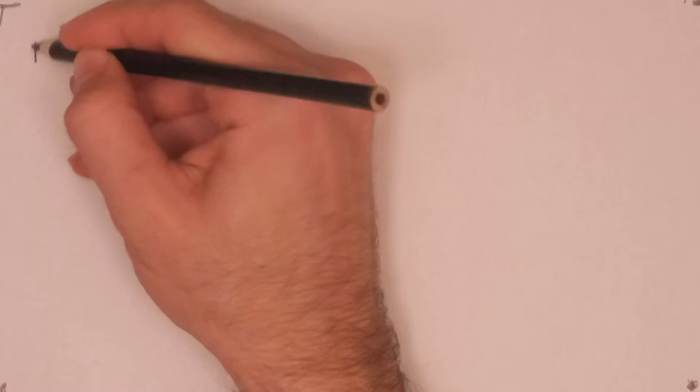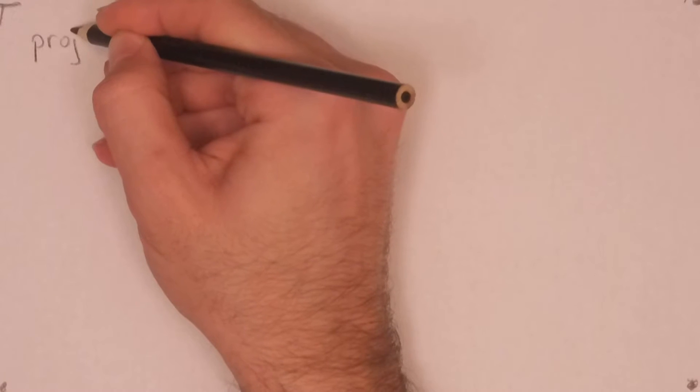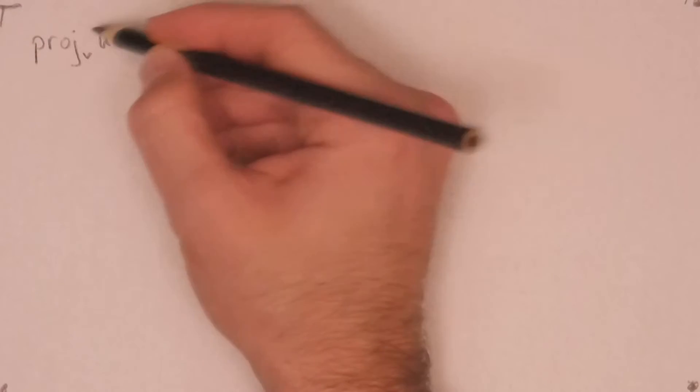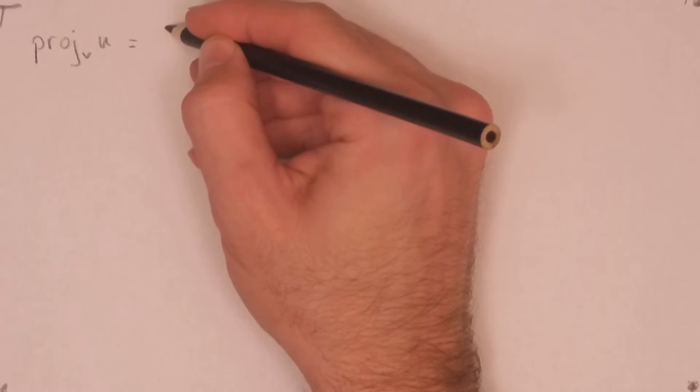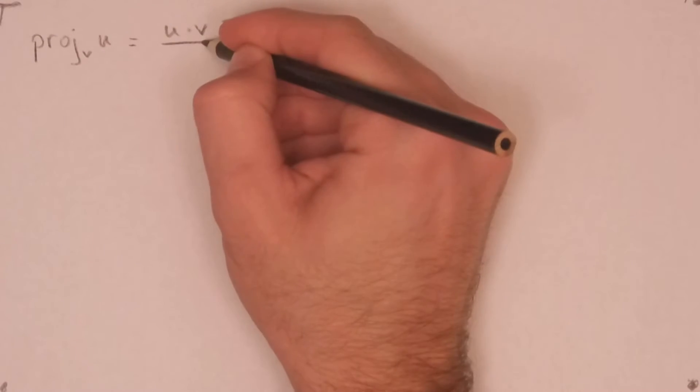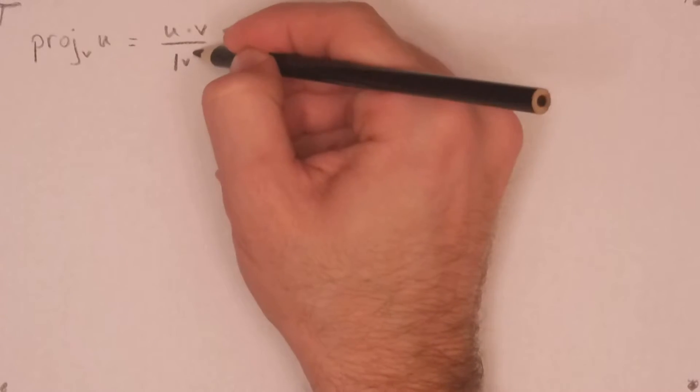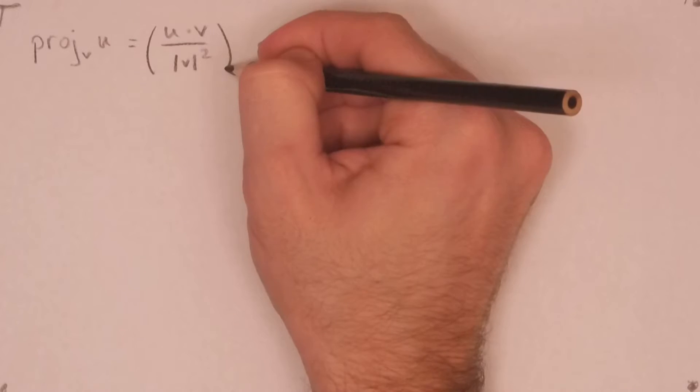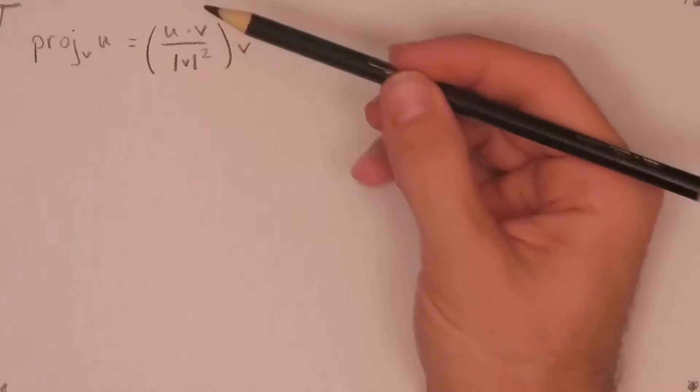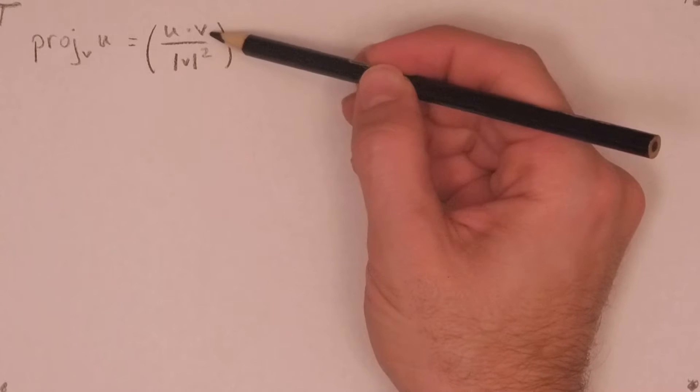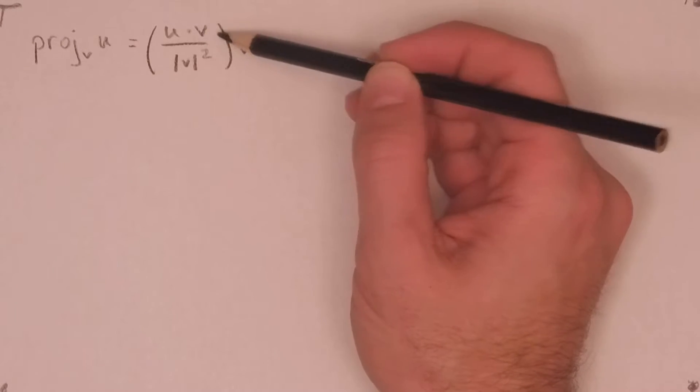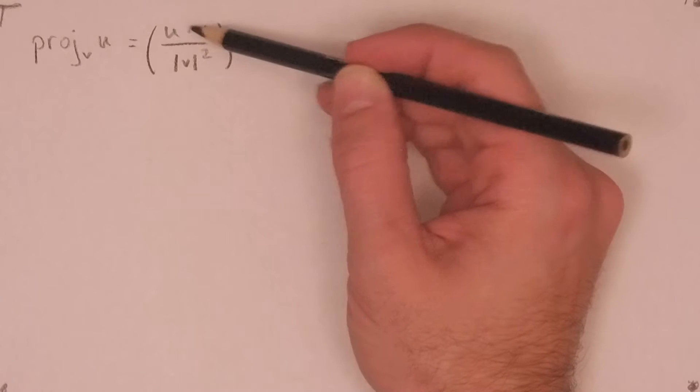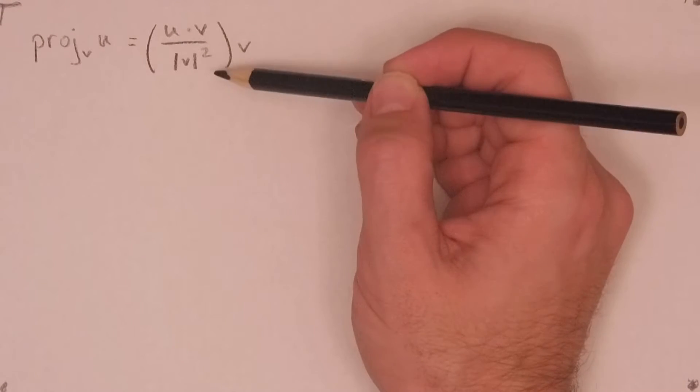So the projection of u on v. The notation for this is as follows here. We have the projection of u on v, and it's equal to u dot v over the magnitude of v squared, quantity times the vector of v. And so what we have here is a dot product which takes two vectors and through an operation gives us a number, a real number as a result.